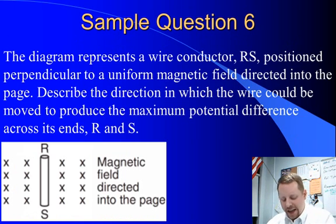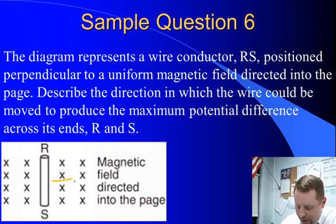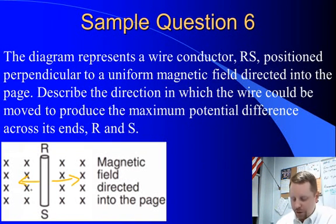One more question. Diagram represents a wire conductor, RS, positioned perpendicular to a uniform magnetic field directed into the page. Again the x's, the back of the arrow. Describe the direction in which the wire could be moved to produce the maximum potential difference across its ends, R and S. And if you remember to get the maximum potential difference, the movement of your conductor relative to the magnetic field has to cut across magnetic field lines. So an easy answer would be either to the right or to the left would give you a maximum potential difference.